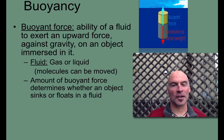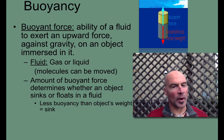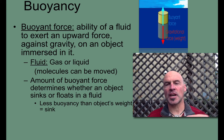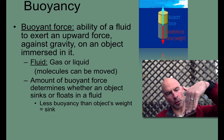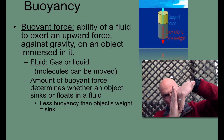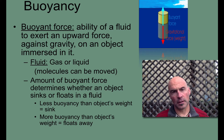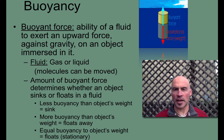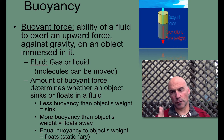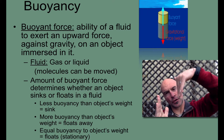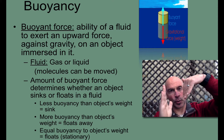The amount of buoyant force determines whether an object sinks or floats in the liquid. If you have less buoyancy than the object's weight, the object is going to sink because the buoyant force is not great enough to push it up. If you've got more buoyancy than the object's weight, it's actually going to sort of float away. If you have equal buoyancy to the object's weight, it's going to float in a stationary position — equal buoyant force up and equal gravitational force down, so you get equilibrium.